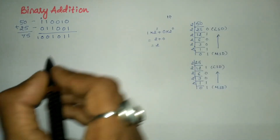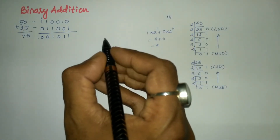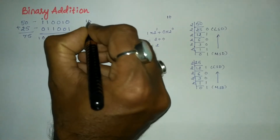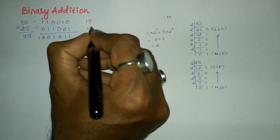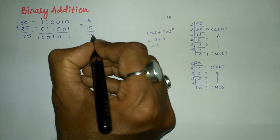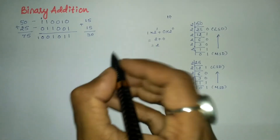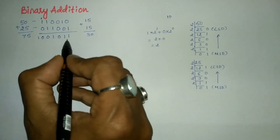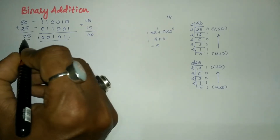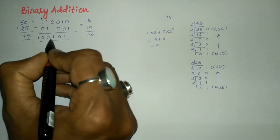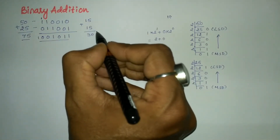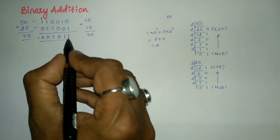Now let us take a second example: 15 plus 15, which should give 30. We will cross-verify whether our binary result equals 75 first, and then proceed to convert for this new example.